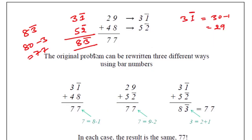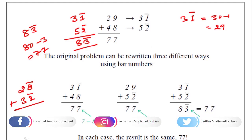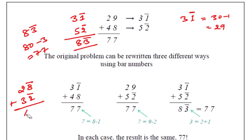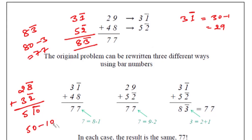So if I ask you to add this number: 28 bar plus 32. Now add this value and give me the answer. The answer is 14. How do we get 14? We get 8 plus 2, that is 10. So this is 10 bar, and 3 plus 2 is 5. So 10 bar means we write the value as 50 minus 10, and it becomes 50.